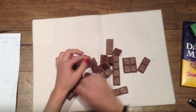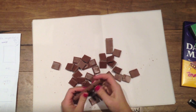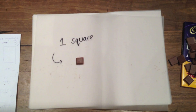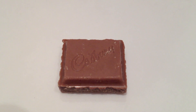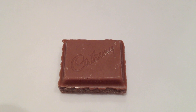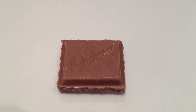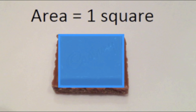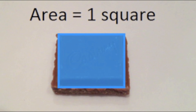A standard chocolate block can be divided up into 40 squares. Here we have one square. When we talk about the area of a shape, we are measuring how much space the shape's surface covers. This chocolate square has an area of one square.